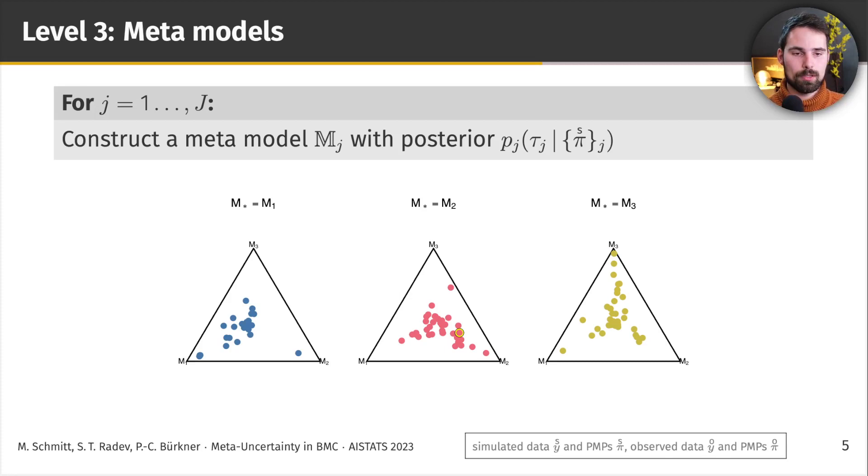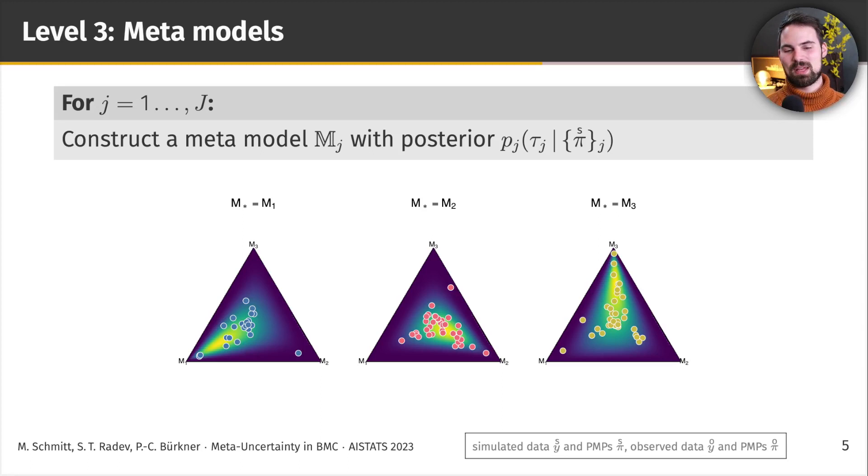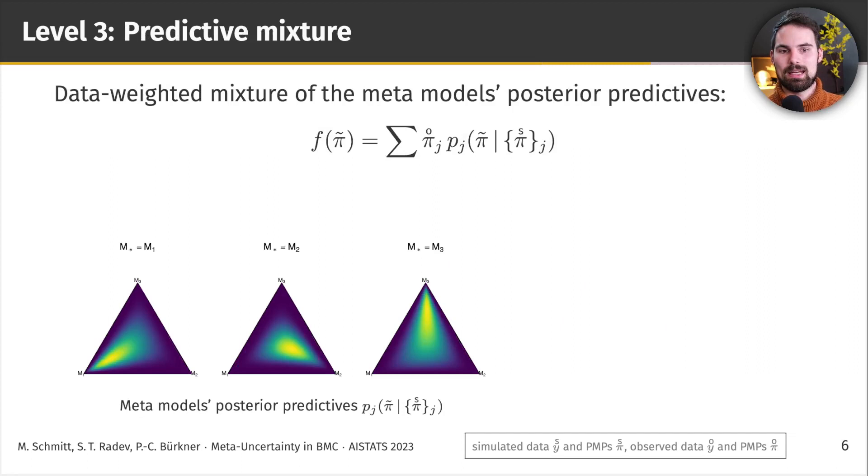Then again, we get a posterior distribution of the parameters of this model. We get a posterior predictive distribution, which again lives in the data space, and the data in this case are the posterior model probabilities. So, I'm going to show you the visualization of the posterior predictive distribution now, and maybe it makes sense now. So, we essentially fit a whole Bayesian model onto these model-implied distributions of posterior model probabilities. And up to this point, all we've worked with are simulations, in fact. So, now we have our meta-models, which capture the essence of the behavior of what posterior model probabilities look like under each data-generating process that we want to compare, only based on simulations.